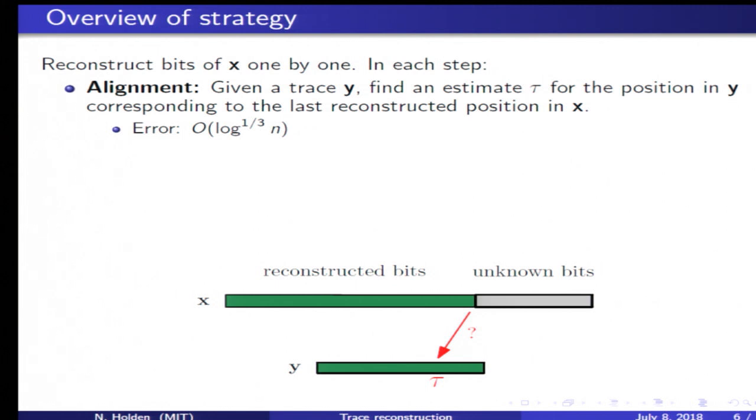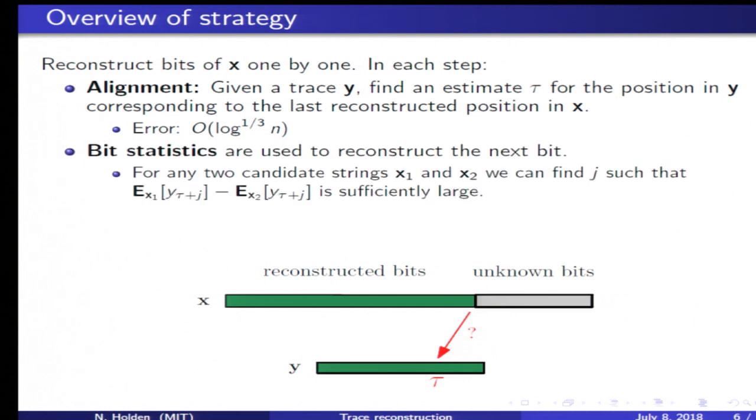The first step of our algorithm is to find the approximate location in the trace which corresponds to this last bit of the input string which we know. We find some estimate in the trace, which we denote by tau.